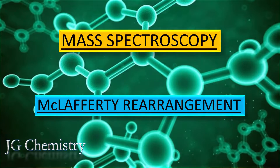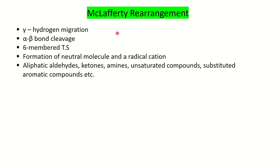Let's begin McLafferty rearrangement. First of all we will see what is McLafferty rearrangement. For a molecule to undergo it, it should have gamma hydrogen migration — that is the first condition, the molecule should have gamma hydrogen. The second is the alpha-beta bond cleavage: gamma hydrogen migration followed by the alpha-beta bond cleavage. The third point to keep in mind is that this transfer or migration of gamma hydrogen occurs through a six-membered transition state.